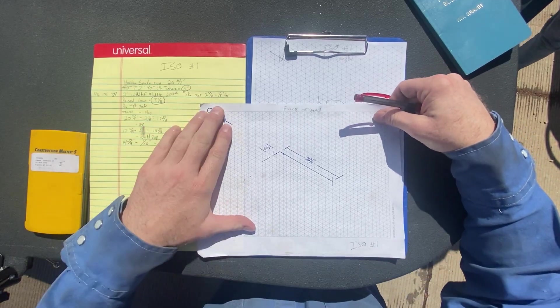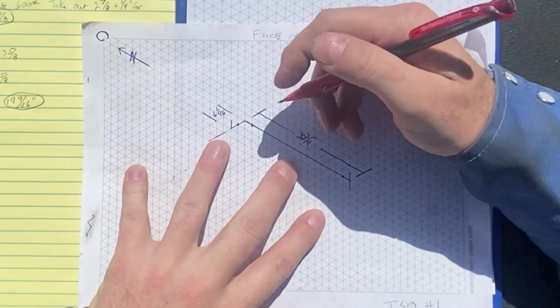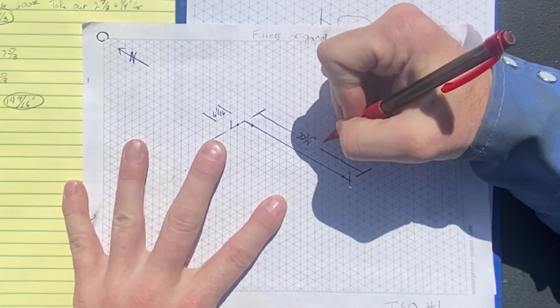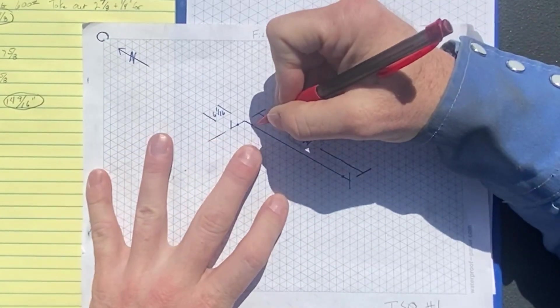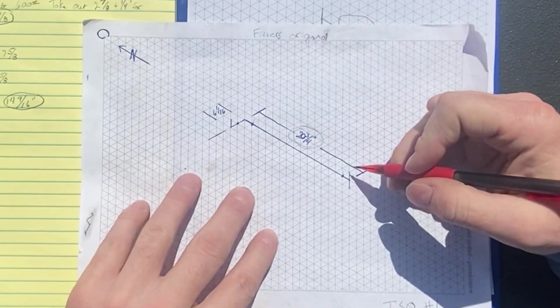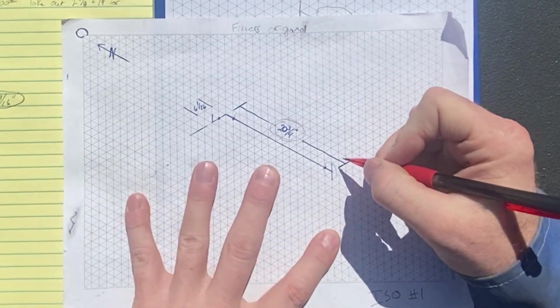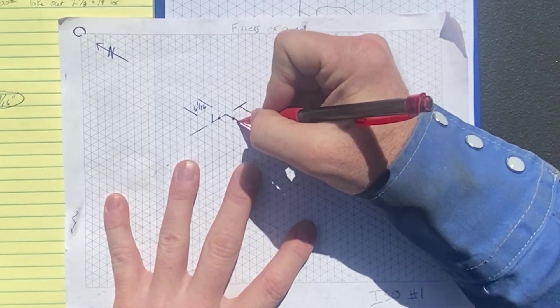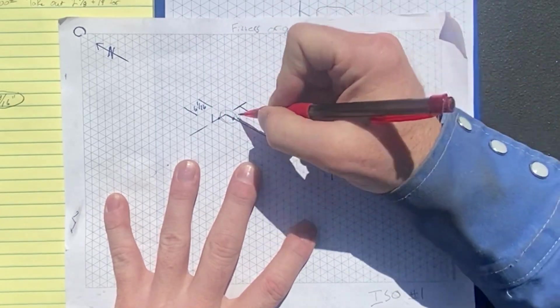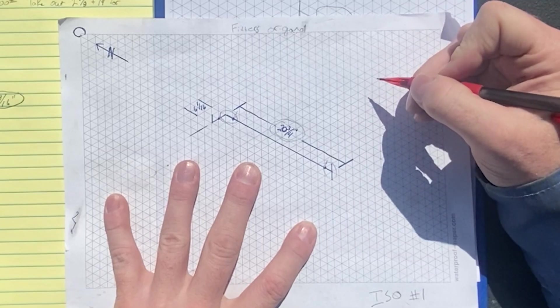Okay, when we talk about a takeout or a takeoff, basically we're taking this number, 20 and three quarters, and we've got to shorten that down to what our actual pipe length is. So our takeoffs or takeout, take off that flange, take off the dimension for that 90, and that leaves you with what that pipe is.